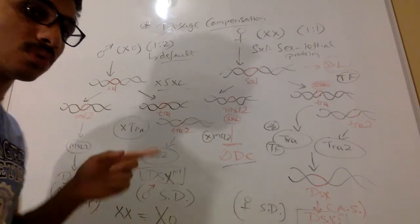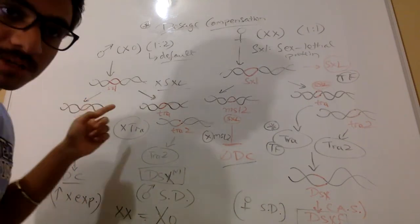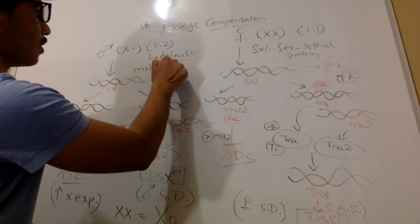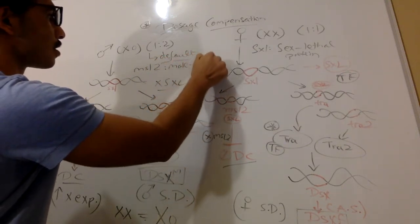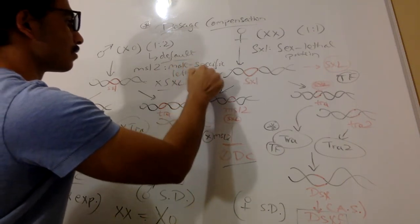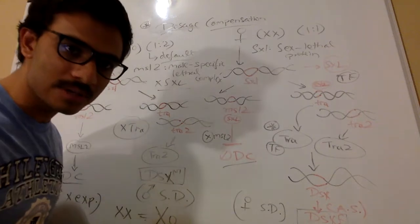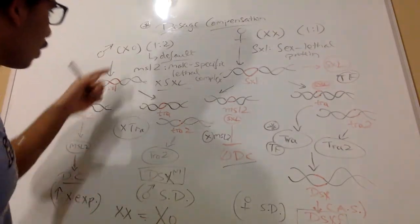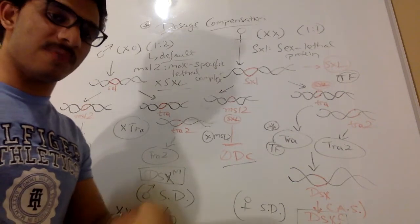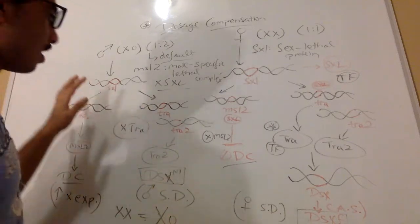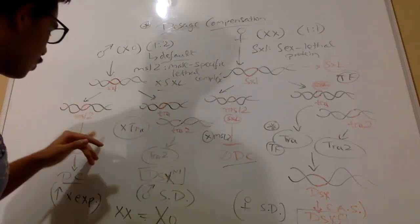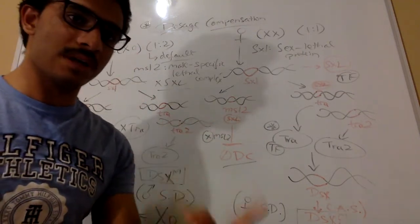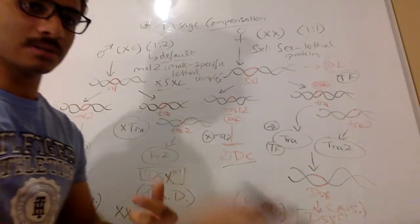Since we don't have any sex lethal protein produced in males, we will have expression of MSL2. MSL2 is called the male specific lethal protein, or complex — the male specific lethal complex. This complex acts as an epigenetic modifier for dosage compensation of the X chromosome. MSL2 complex will cause dosage compensation in males by increasing gene expression two times on the single X chromosome, to match the two X chromosomes in females.